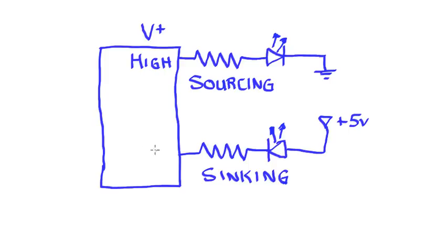The opposite is true with sinking, that the output will only go on when the port is low because that's when the connection to ground is being made. And when we have that connection to ground, we have a complete circuit from the positive 5 volts to ground. When it goes high, that complete circuit no longer exists.